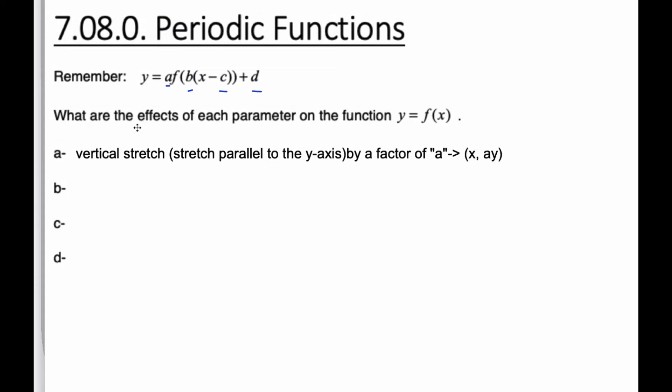The b value is inside the function of f. So the b value is going to affect the x value. And what the b value does, it's multiplication, but it is a horizontal stretch, or stretch parallel to the x-axis, by a factor of 1 over b. This is an important one. It's kind of the opposite of what you expect. So when you're inside the function, the operation is kind of backwards. Here it looks like you're multiplying, but in fact it divides.